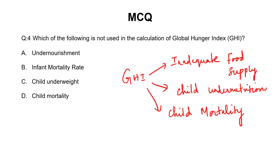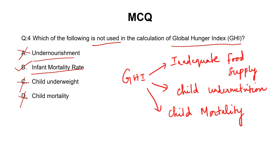Coming back to the MCQ: which of the following is not used in the calculation of the global hunger index? The GHI has three dimensions — inadequate food supply, child undernutrition, and child mortality — so options C (child underweight, i.e., child undernutrition) and D (child mortality) are ruled out. Option A (undernourishment) is the indicator for inadequate food supply, so it is also ruled out. The answer is option B — infant mortality rate — because the GHI uses under-5 mortality rate, not infant mortality rate.